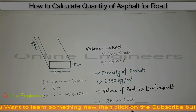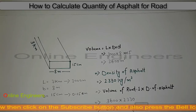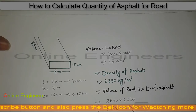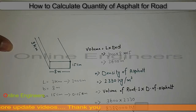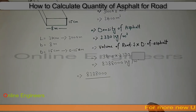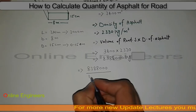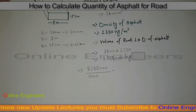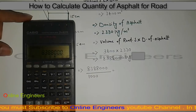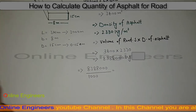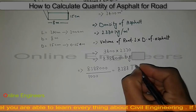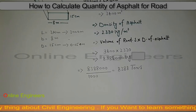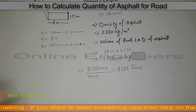Now I want to convert this value to tons. We know that one ton equals 1000 kg, so we divide 8,388,000 by 1000, which gives us the answer 8388 tons.